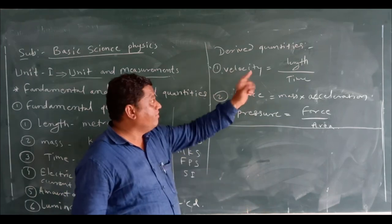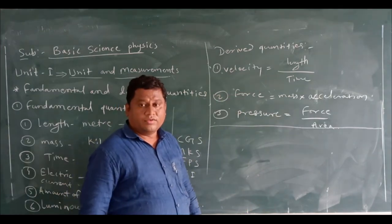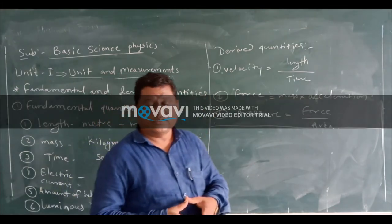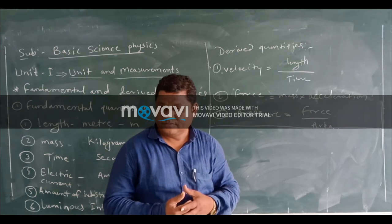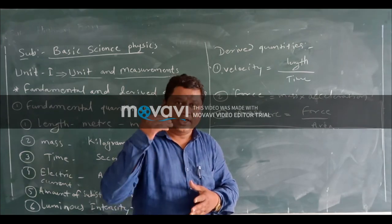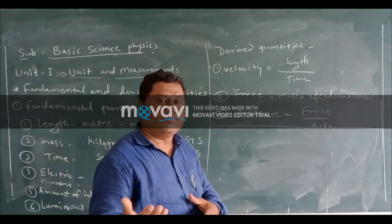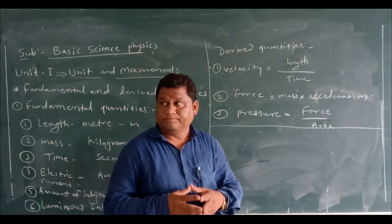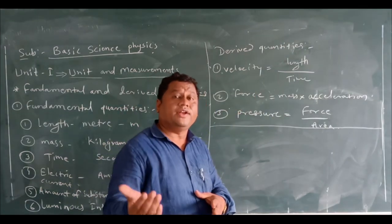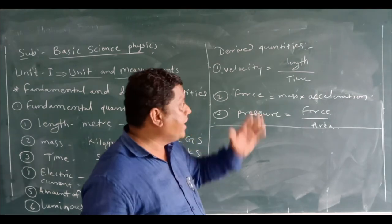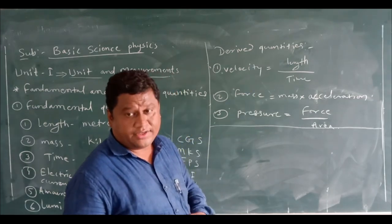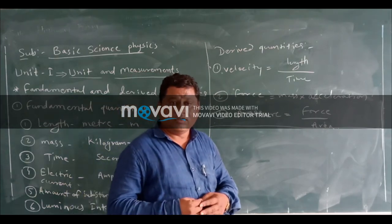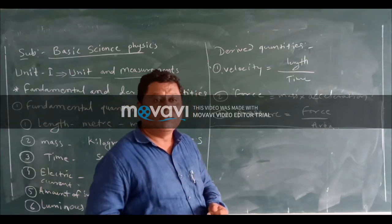For example, velocity. You know that velocity is defined as the rate of change of displacement with respect to time. The displacement is the vector quantity because it has direction as well as magnitude.